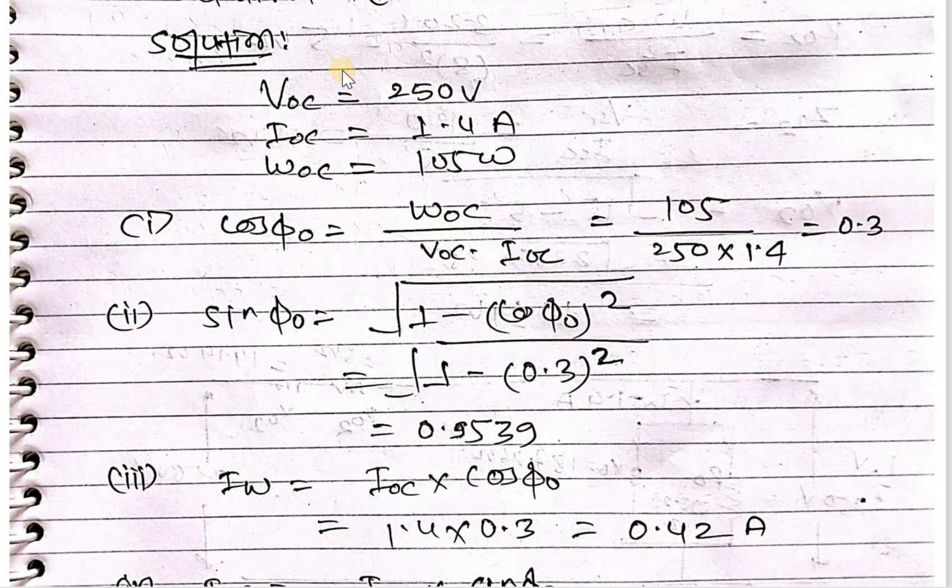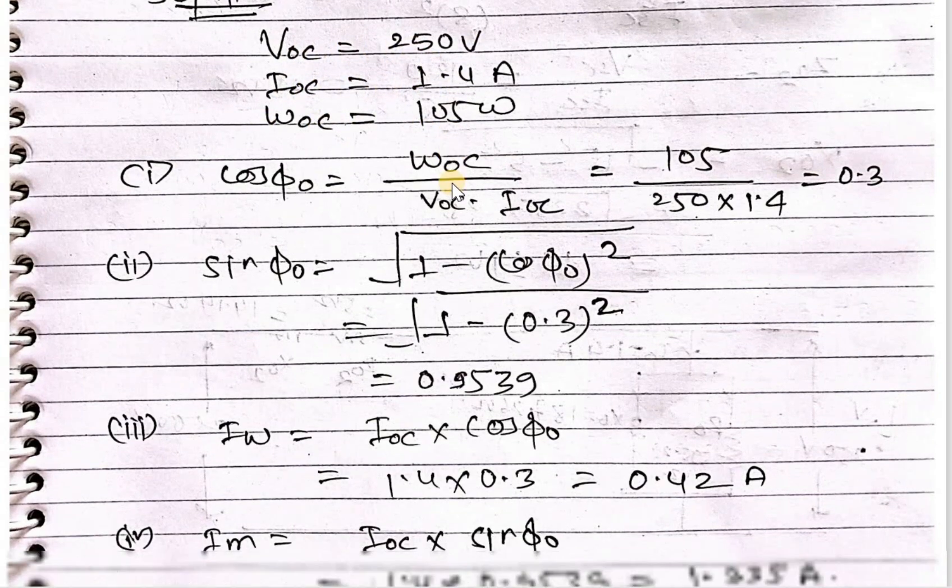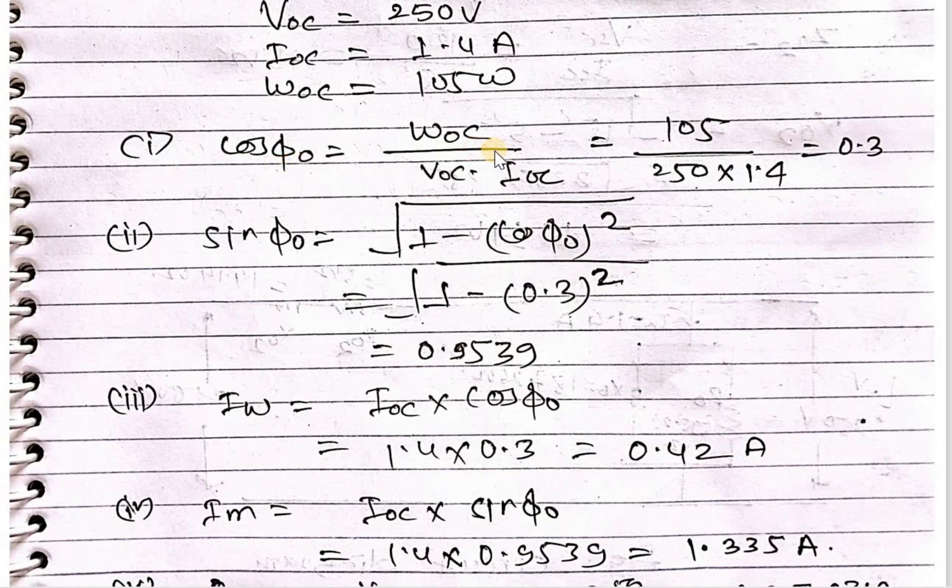First of all, from open circuit test: Voc equals 250, Ioc equals 1.4, and Woc equals 105 watt. Cos phi equals Woc upon Voc into Ioc.